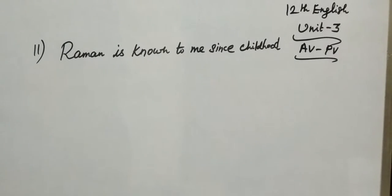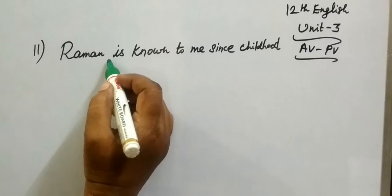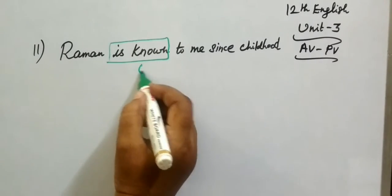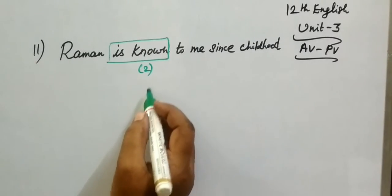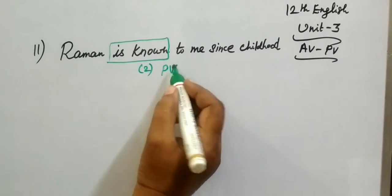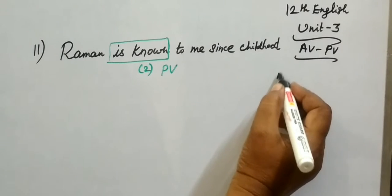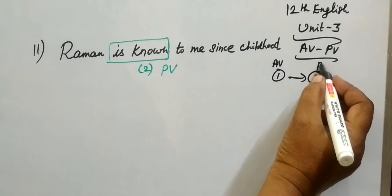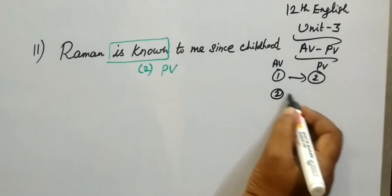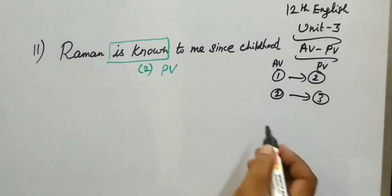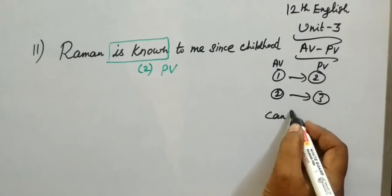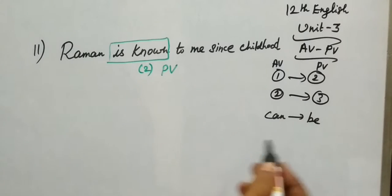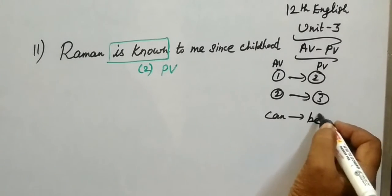Next one: Raman is known to me since childhood. Check whether it is active or passive voice. See the verb — there are two verbs. Two verbs means it refers to passive voice. One verb form means active voice; two verbs means passive voice.